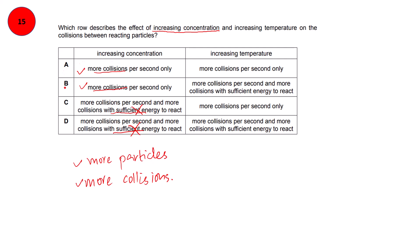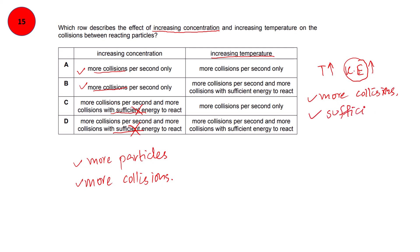We are left with options A and B. Now considering the effect of increasing temperature: when you increase temperature, the kinetic energy of particles increases, so particles move faster and there will be more collisions. Additionally, these particles now have sufficient energy because increasing temperature also increases their energy. So both effects apply: more collisions per second and more collisions with sufficient energy. This is option B.